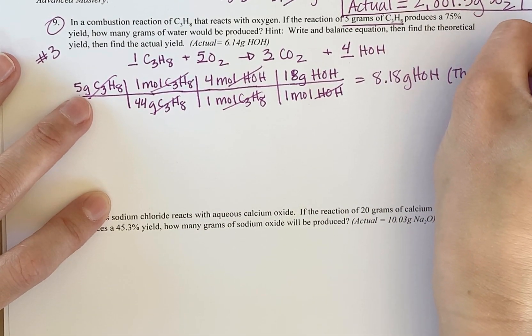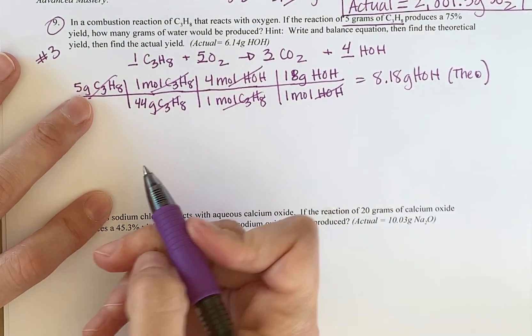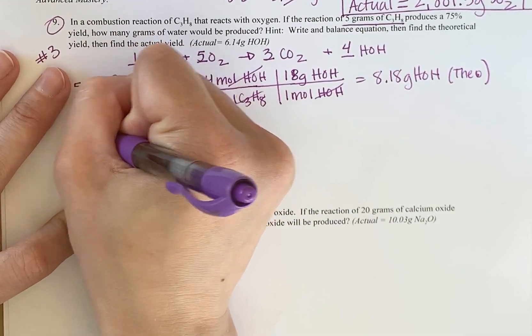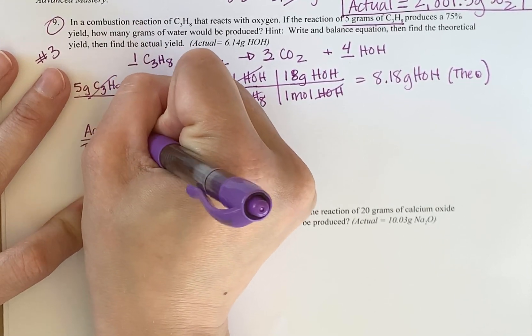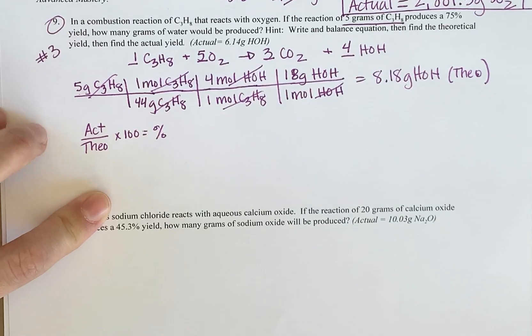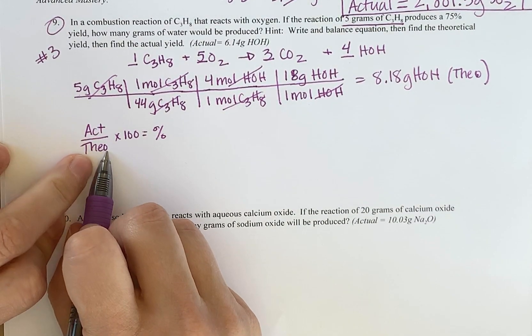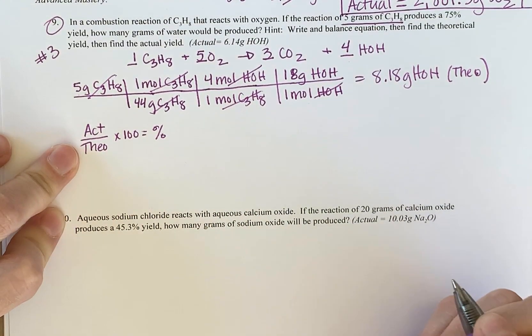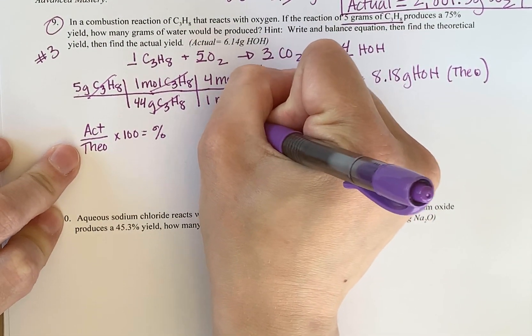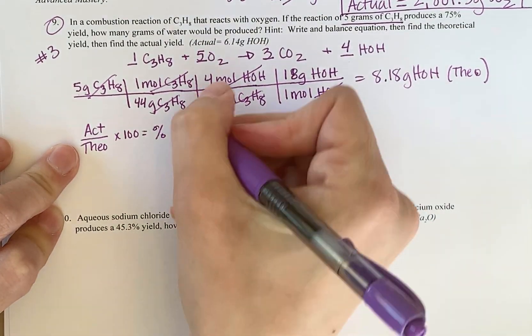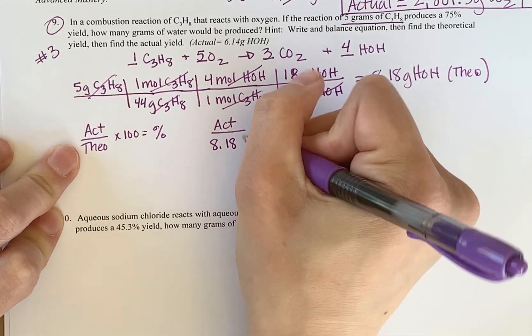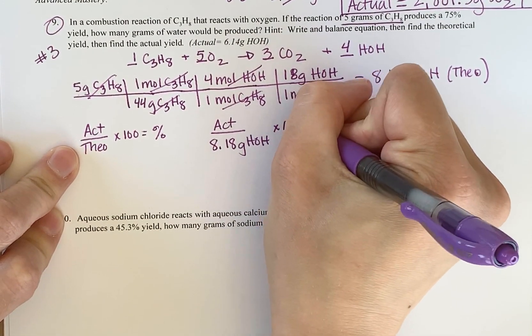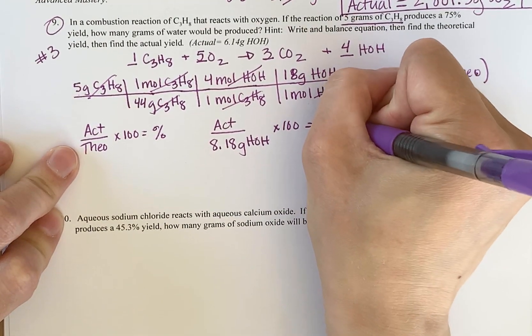Now remember, this is my theoretical yield. And they tell me that I have a 75% yield. So if I know actual divided by theoretical times 100 gives me my percent, that means I know my theoretical, I just solved for it. And I know my percent this time, I'm going to actually solve for my actual. So I'm just going to write actual divided by 8.18 grams of HOH times 100 equals the percent of 75.